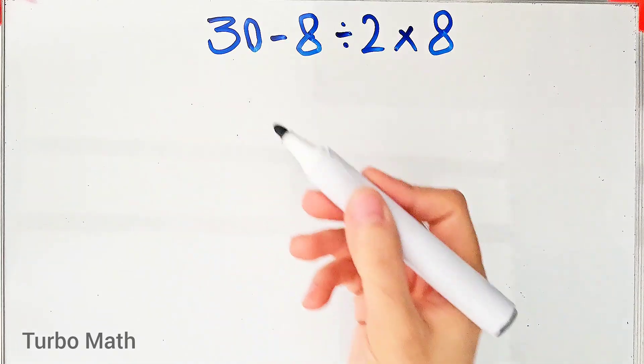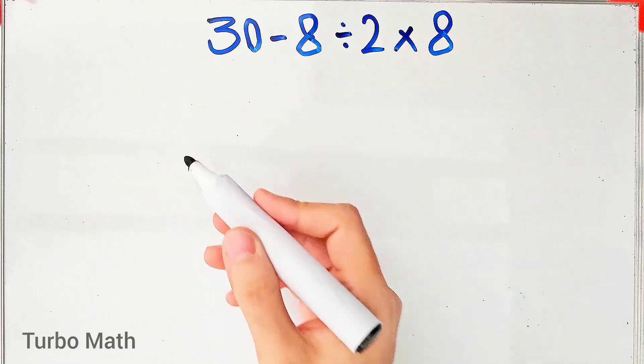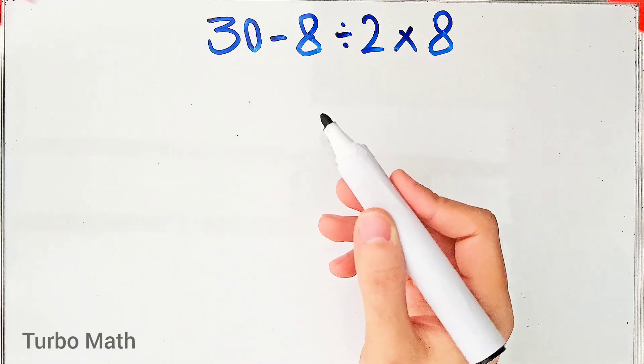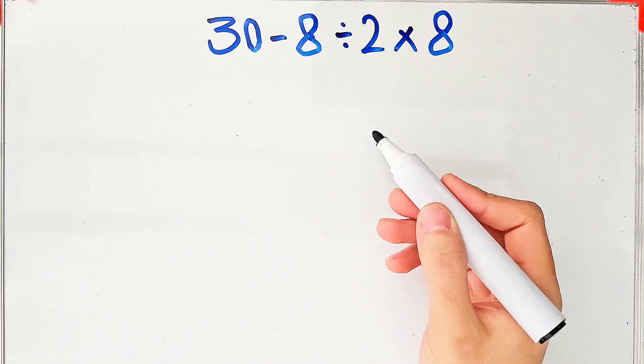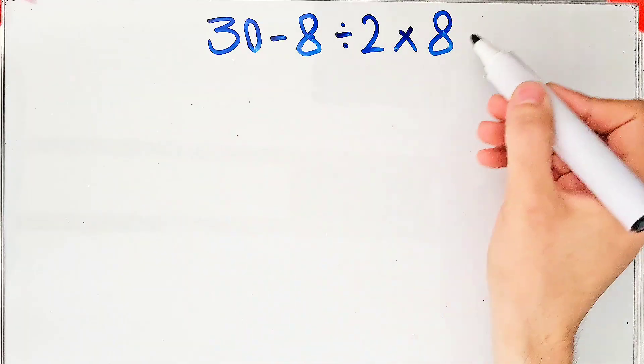Hi friends, welcome to Turbo Math Channel. Many people when they see this question don't know which math operation to do first and they might get it wrong. The question is 30 minus 8 divided by 2 then times 8.